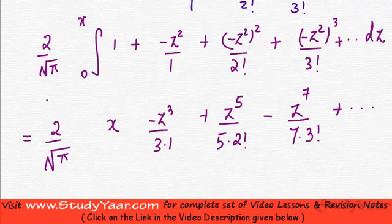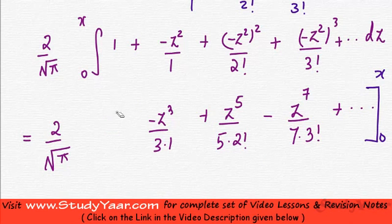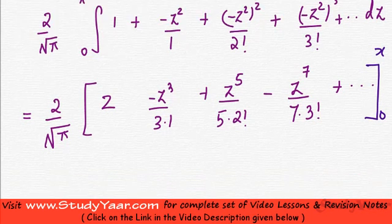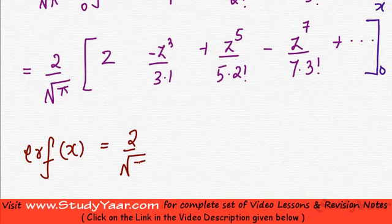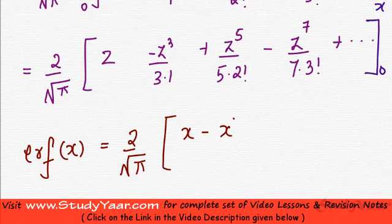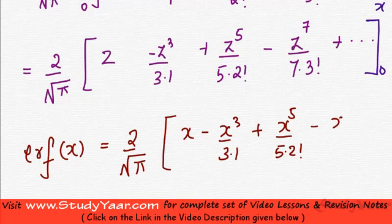So this is your error function — you put in your limits and then you get the error function for the given x. The integration of 1 dz is z. What you get as error function for a given x is 2 upon root pi. Now you can put in x: you get x minus x cubed upon 3 dot 1 factorial, plus x raised to power 5 upon 5 dot 2 factorial, minus x raised to power 7 upon 7 dot 3 factorial, and so on.